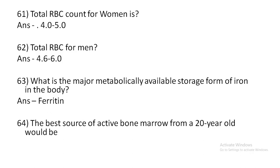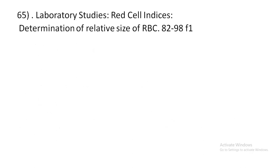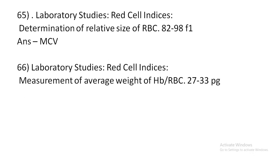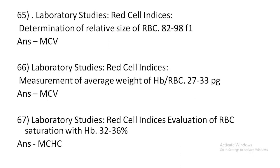The best source of active bone marrow from a 20-year-old would be the iliac crest or hip. Laboratory red cell indices: MCV determines relative size of RBC (82–98 fL); MCH measures average weight of hemoglobin per RBC (27–33 pg); MCHC evaluates RBC saturation with hemoglobin (30–36%).